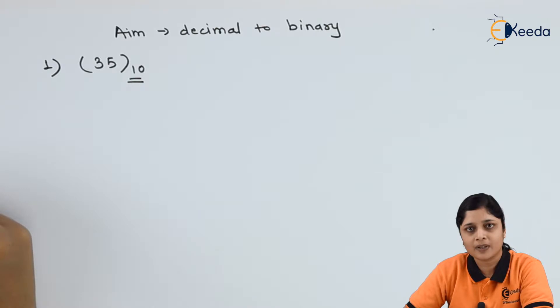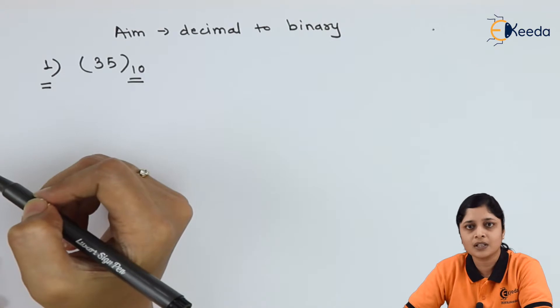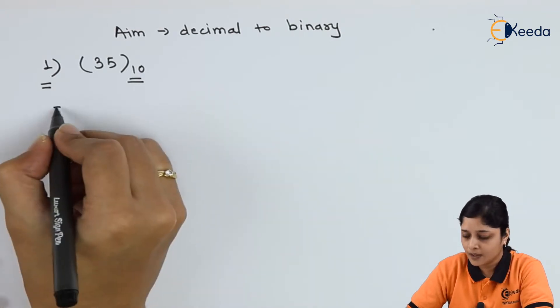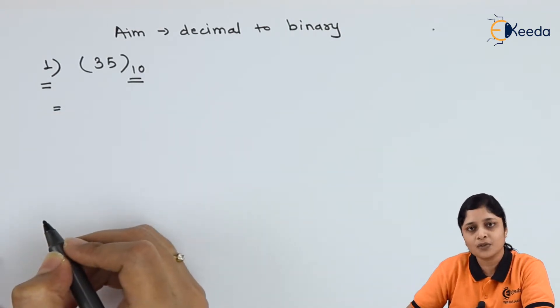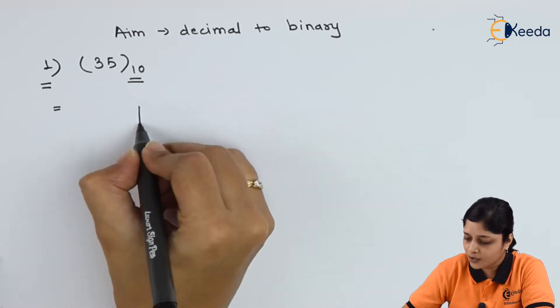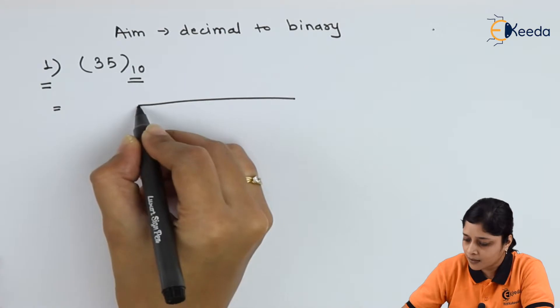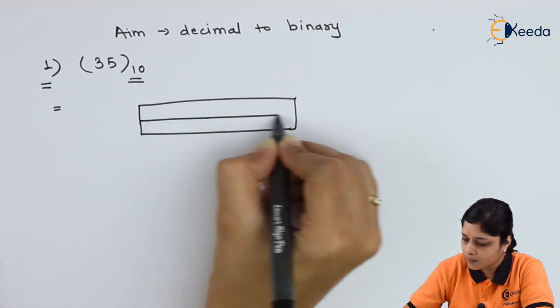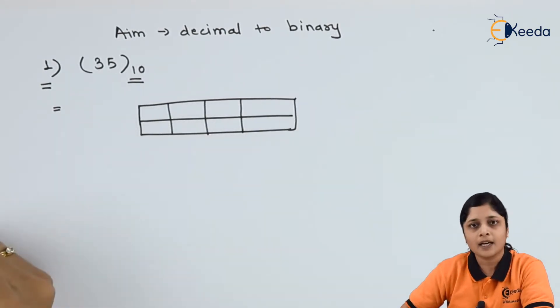Let's start with first example for conversion of decimal number to the binary number. First example is 35 to the base 10. Your aim is to convert it into binary number. Here you will apply successive division method to solve this example. For that you have to draw one table and you have to apply successive division method.